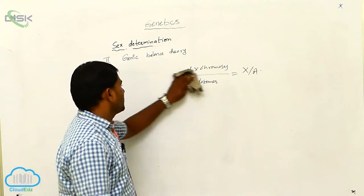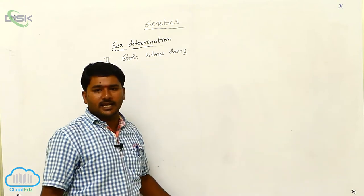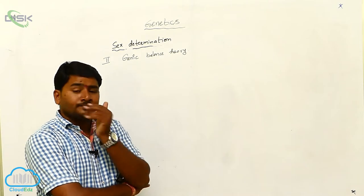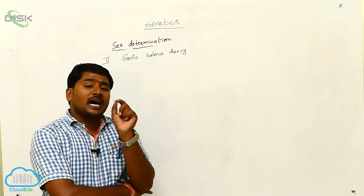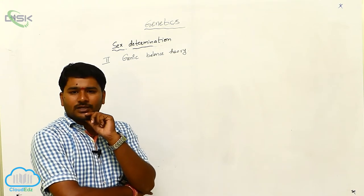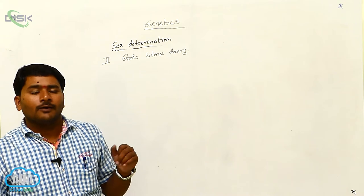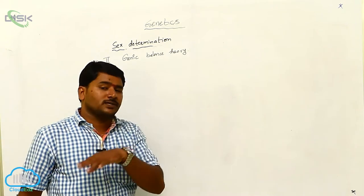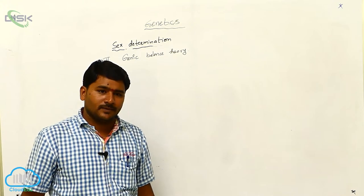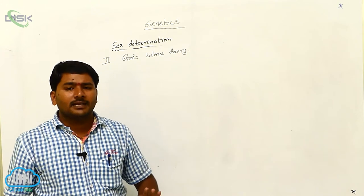Why is the ratio of X by A deciding the sex? What is happening in Drosophila? Due to the non-disjunction of chromosomes, the gametes are formed with extra chromosomes or fewer chromosomes. This is called aneuploidy. Why is it happening? Non-disjunction.